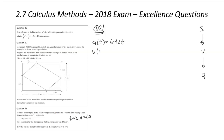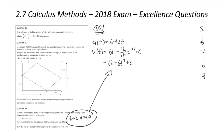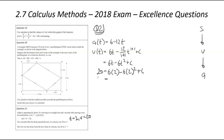Let's jot down our acceleration: that's 6 minus 12t. Just a reminder — displacement goes to velocity by differentiating, and velocity goes to acceleration. If you're wanting to go backwards, we need to integrate to get there. So the velocity in terms of t is going to be 6t minus 12 divided by 2 times t squared plus c, which becomes 6t minus 6t squared plus c. We've been given information about velocity, so we substitute velocity equals 20 and t equals 2 to find that constant: 20 equals 6 times 2 minus 6 times 4 plus c, giving negative 12 plus c equals 20, so c equals 32.